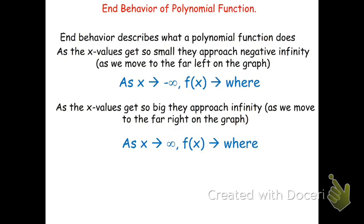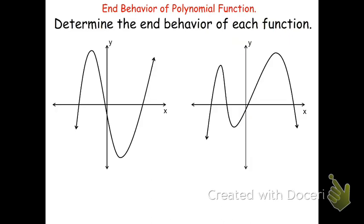Let's look at a couple of examples of polynomial graphs and their end behavior. The graph on the left has end behaviors going in different directions — the left-hand side is going down while the right-hand side is going up. On the other function, the one on the right, both end behaviors are going down. This is the difference between an even degree and an odd degree polynomial. The one with ends going in different directions is an odd degree polynomial, whereas the one where ends go in the same direction is an even degree polynomial.